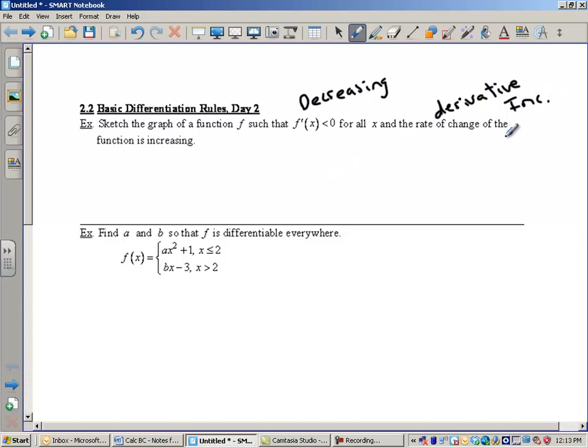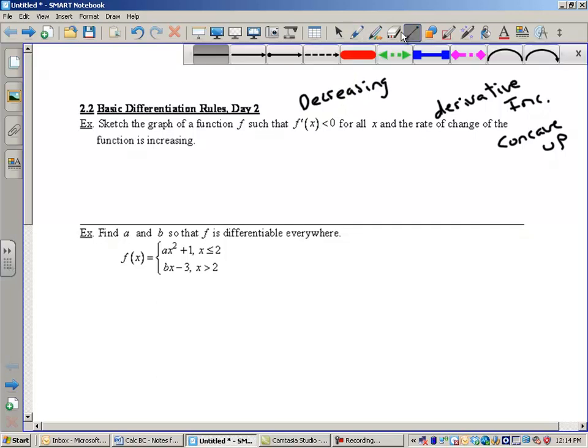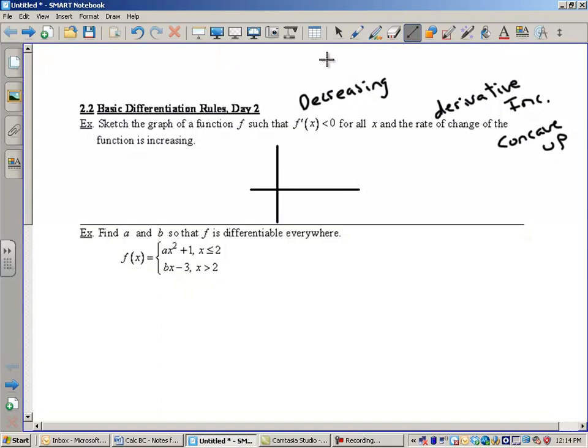We're going to give that a name in probably a couple of weeks. We're going to call that concave up. If the derivative is increasing, it's going to be concave up. An example would probably be a negative exponential. Let's take a look at this negative exponential.